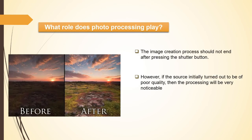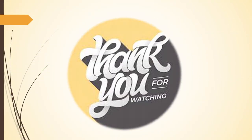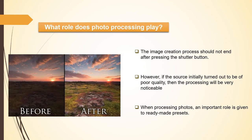The image creation process should not end with pressing the shutter button. In fact, that is only the first half of the shooting process. For many photographers, the second part consists of post-processing. You can use it to correct technical issues such as exposure, horizon, adding shade, and so on. However, if the source image is initially poor quality, processing will be very noticeable. Strive to ensure that your original photos are immediately worthy, as natural results will never go out of fashion.